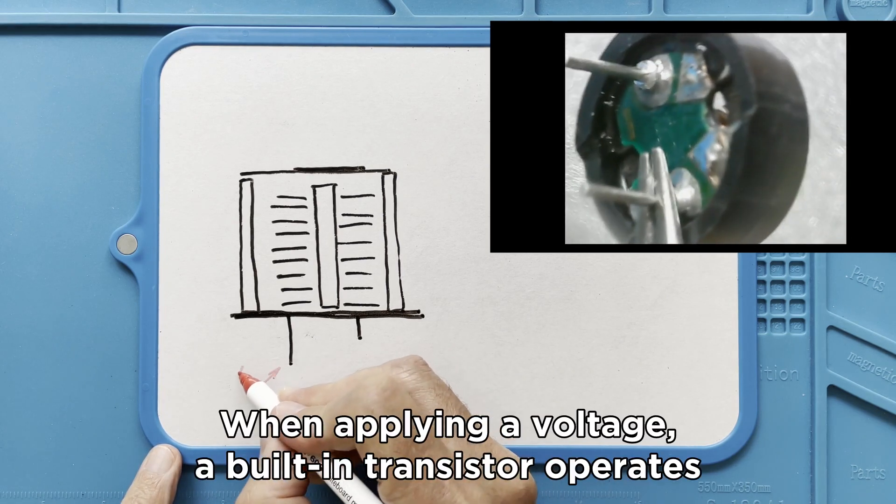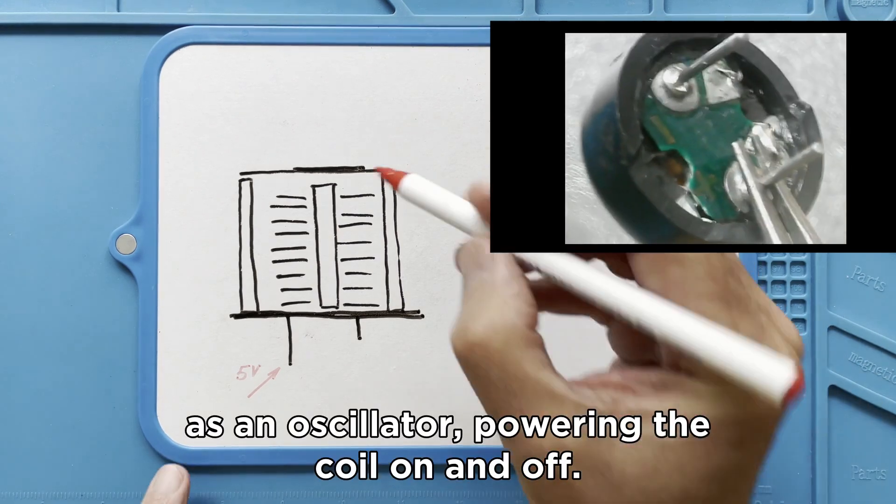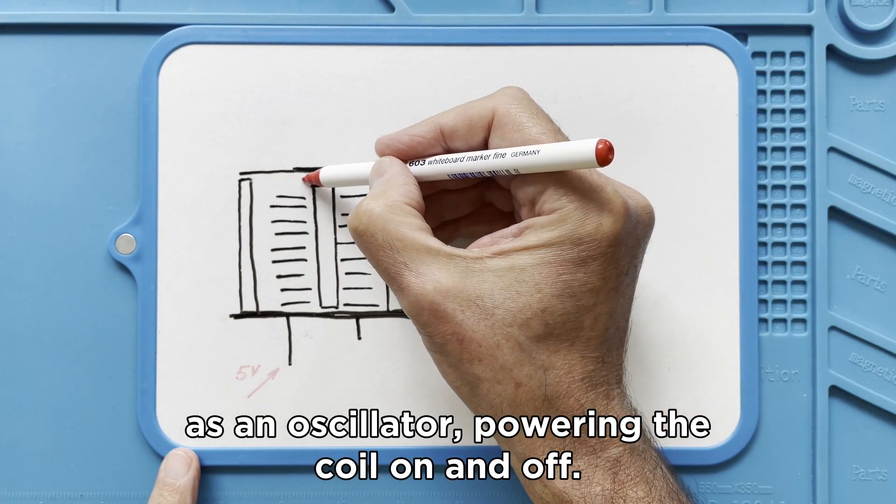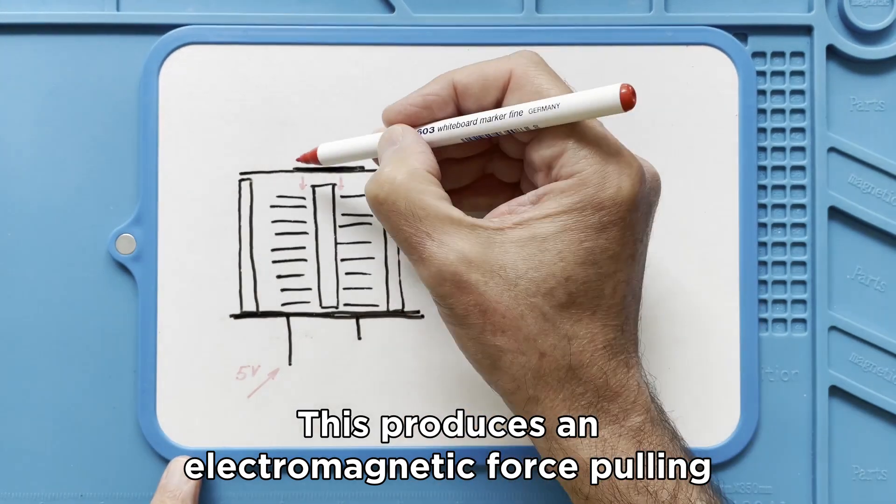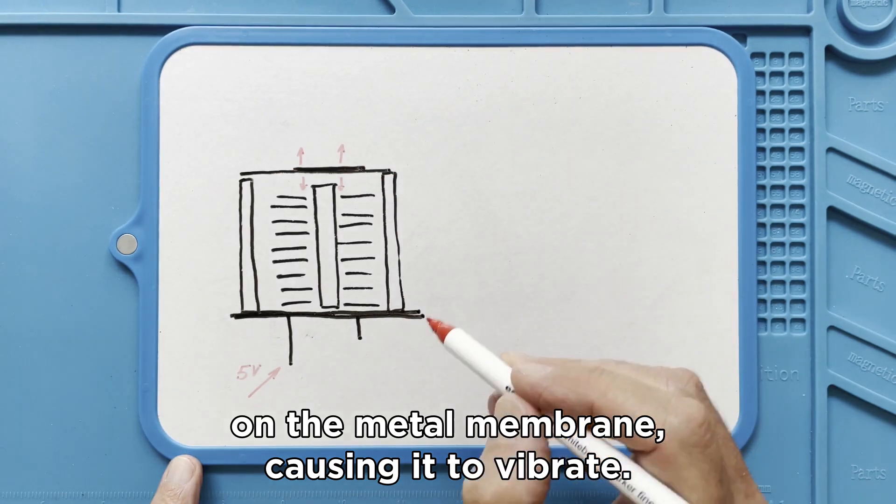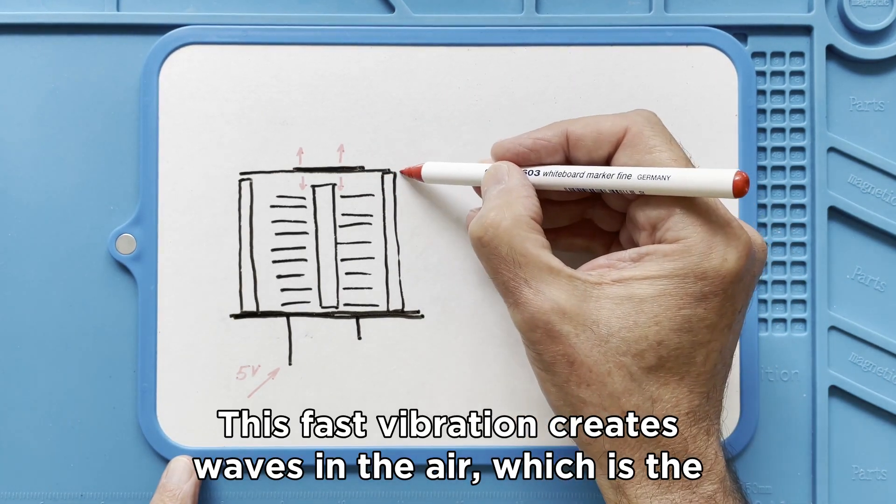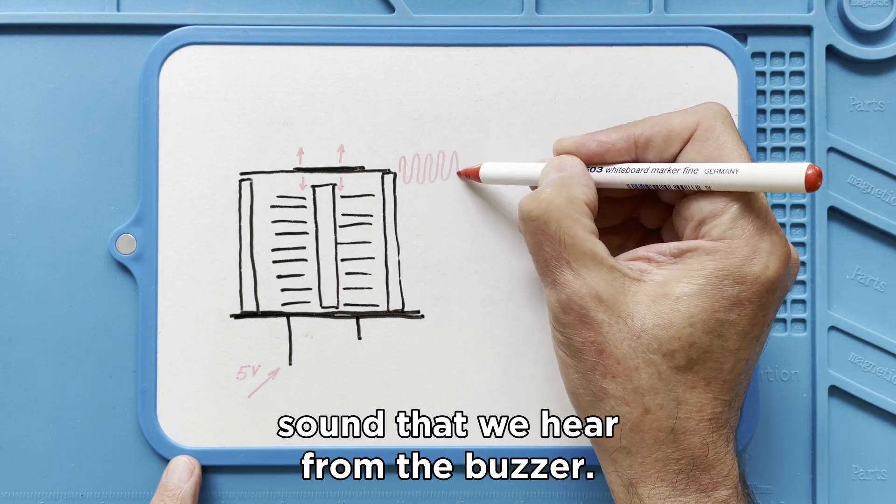When applying a voltage, a built-in transistor operates as an oscillator, powering the coil on and off. This produces an electromagnetic force, pulling on the metal membrane, causing it to vibrate. This fast vibration creates waves in the air, which is the sound that we hear from the buzzer.